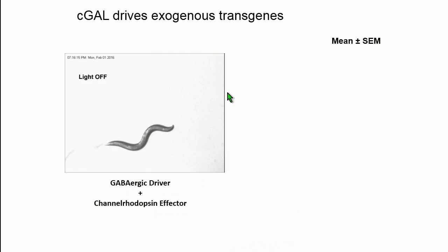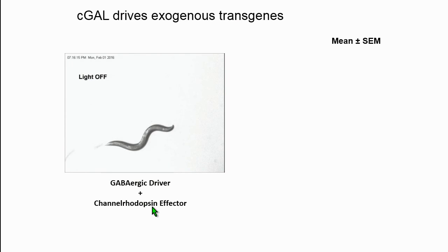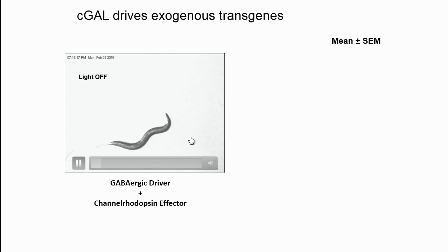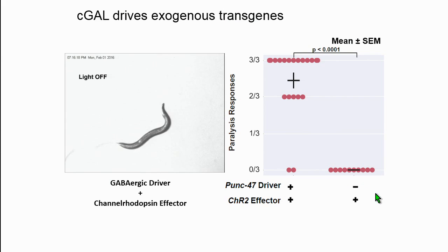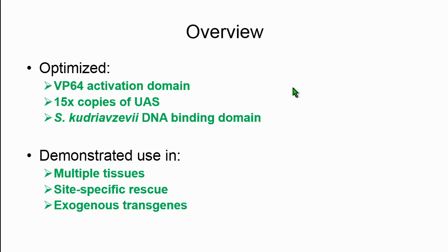To test driving of exogenous genes, we paired a GABAergic driver with channelrhodopsin. In response to blue light, channelrhodopsin activates GABAergic cells, causing the worm to freeze as all body wall muscles relax. The worm is moving along, we hit it with light, it stops and goes limp, and once we remove the stimulus, it resumes locomotion. With the effector alone there's no effect — only with both components is there robust, specific channelrhodopsin expression.